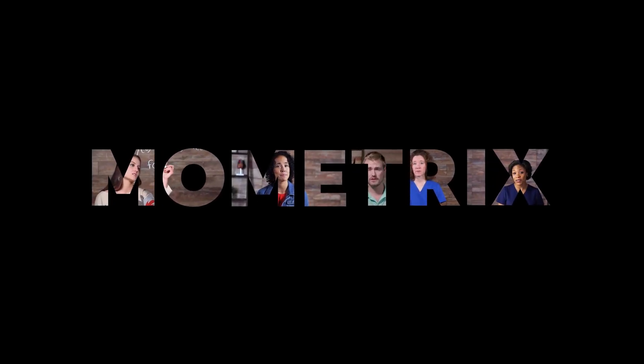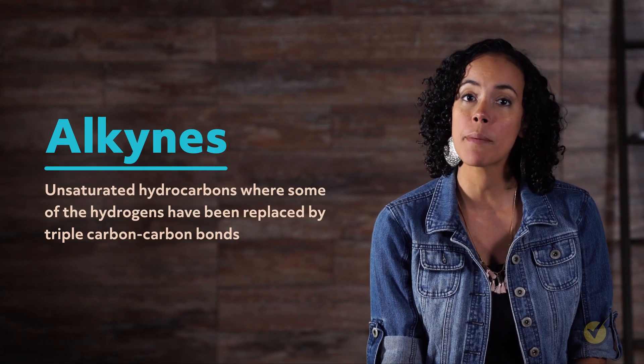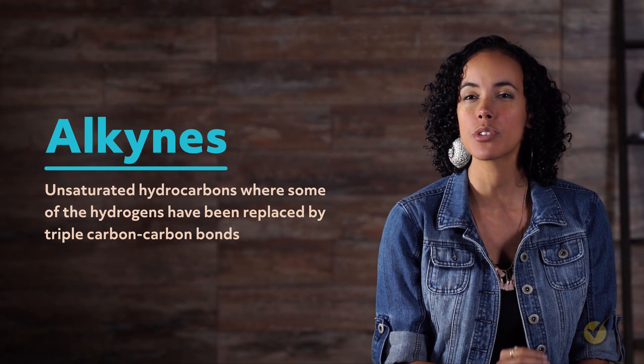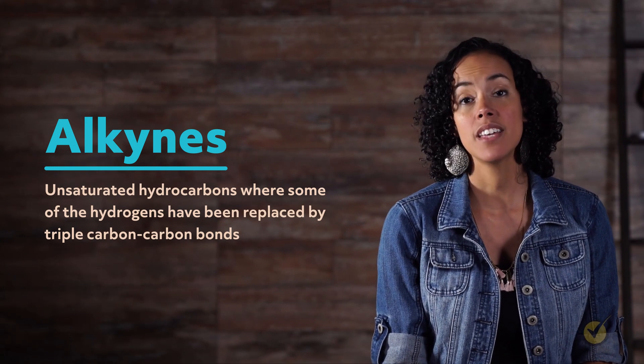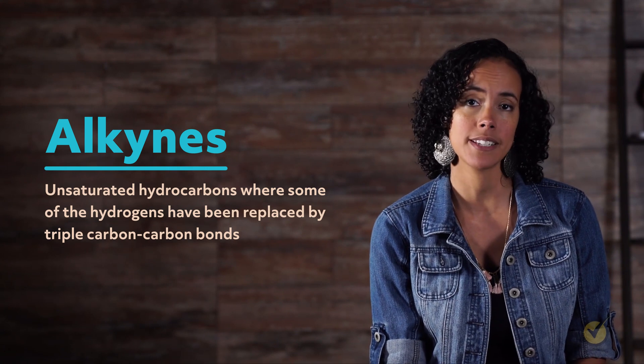Hi, and welcome to this video on alkynes. Alkynes are unsaturated hydrocarbons where some of the hydrogens have been replaced by triple carbon-carbon bonds. Thus, like alkenes, some of the hydrogens have been replaced by pi bonds between carbons.